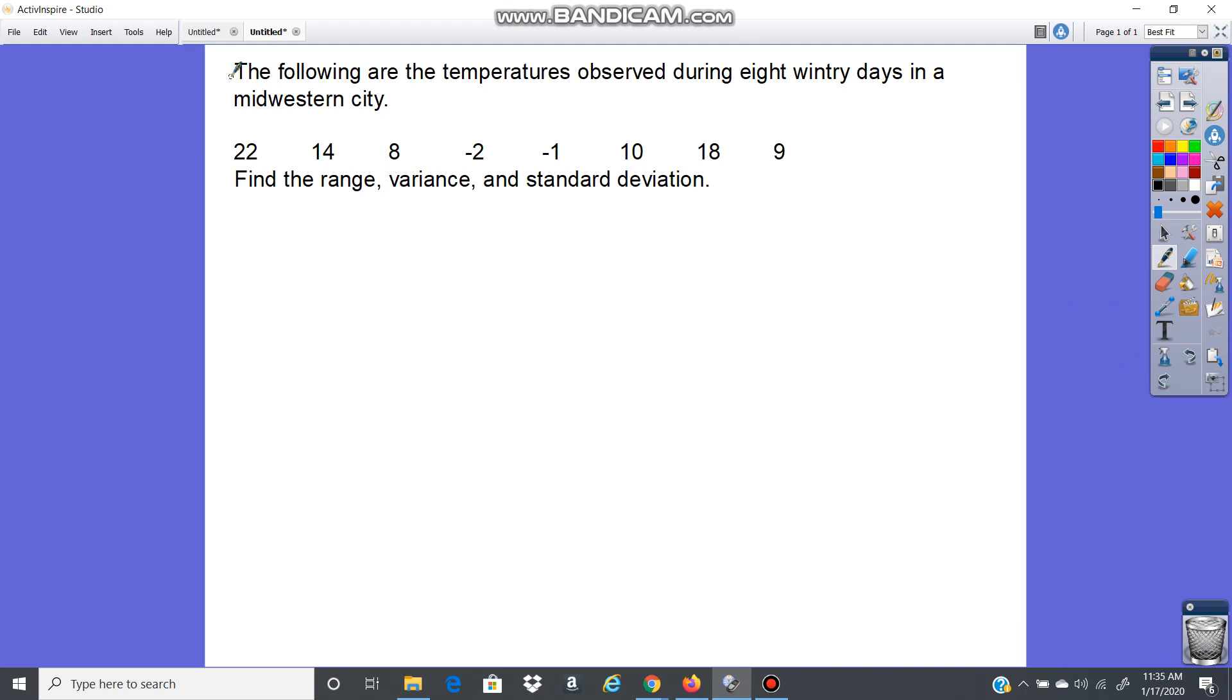The following are the temperatures observed during eight wintry days in a Midwestern city: 22, 14, 8, -2, -1, 10, 18, 9. Find the range, variance, and standard deviation. First, the range is the highest value minus the lowest value. The highest is 22 and the lowest is -2. So 22 minus negative 2 gives us 24.